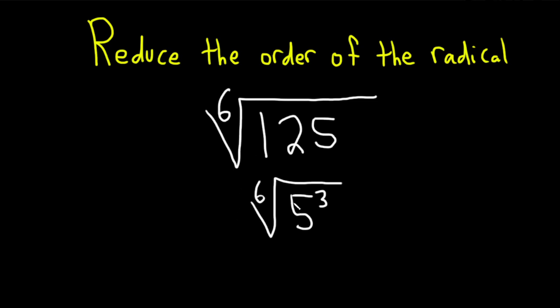And now what we can do is whenever you have something like this, if you have the mth root of x to the n, that's just x to the n over m, n over m like this.